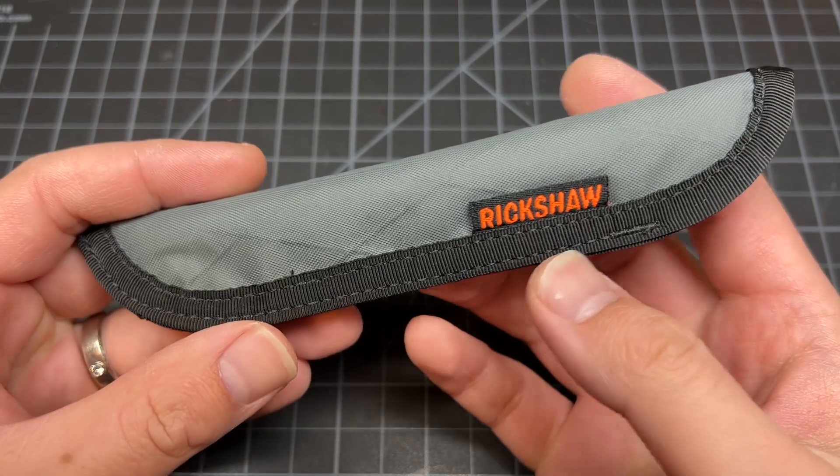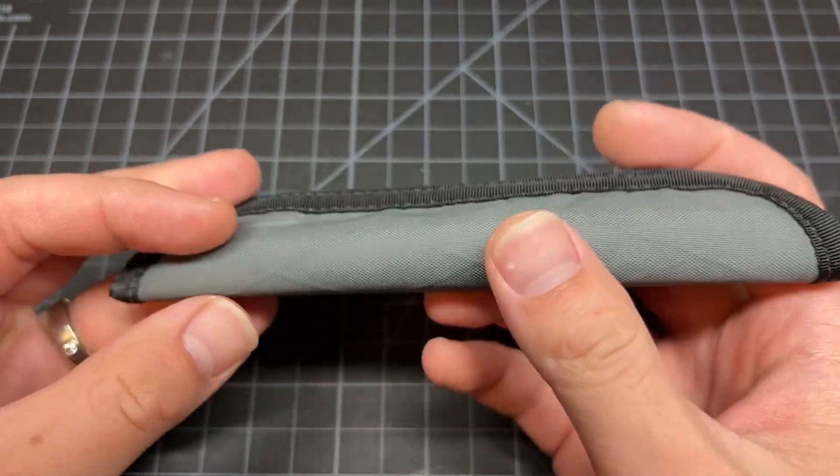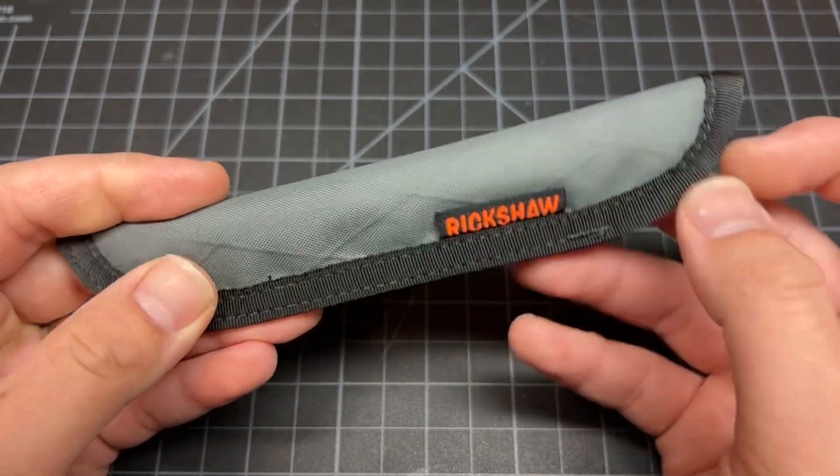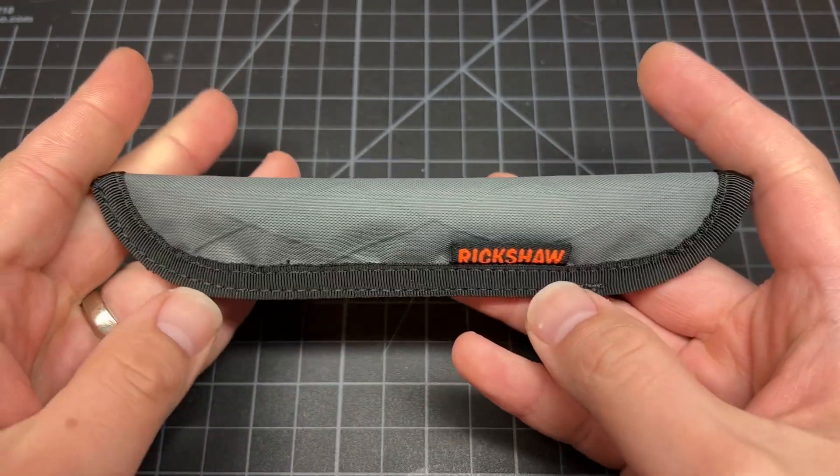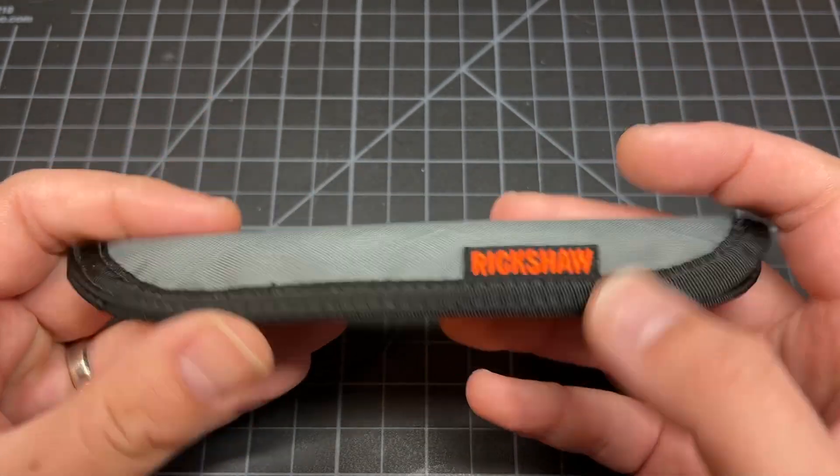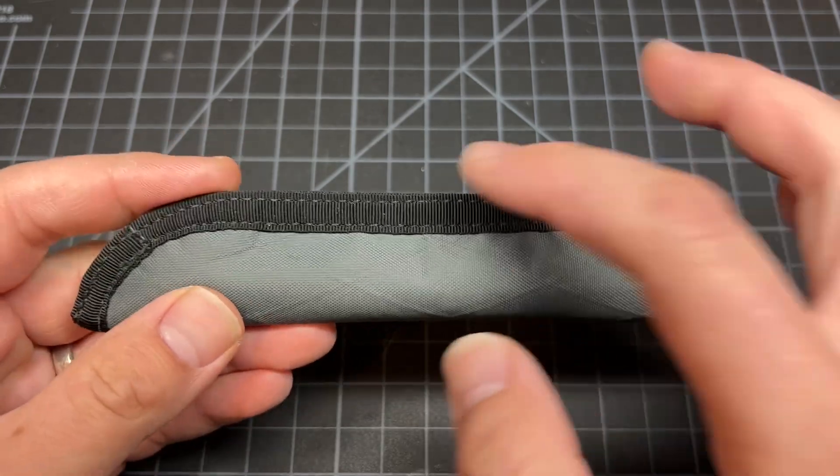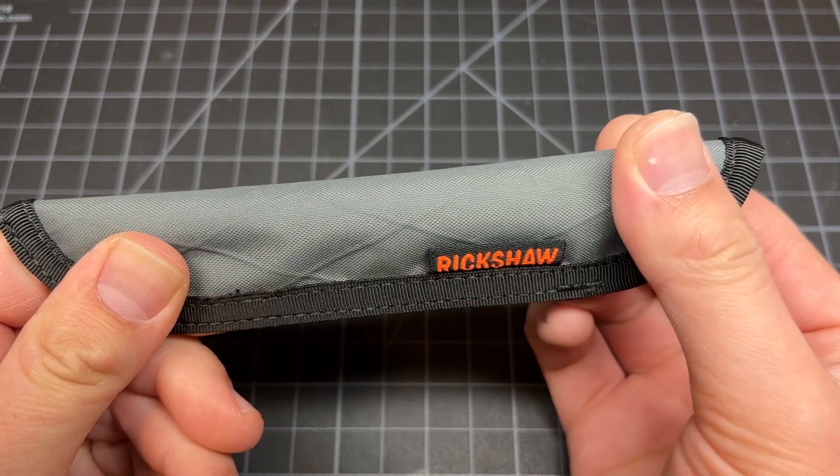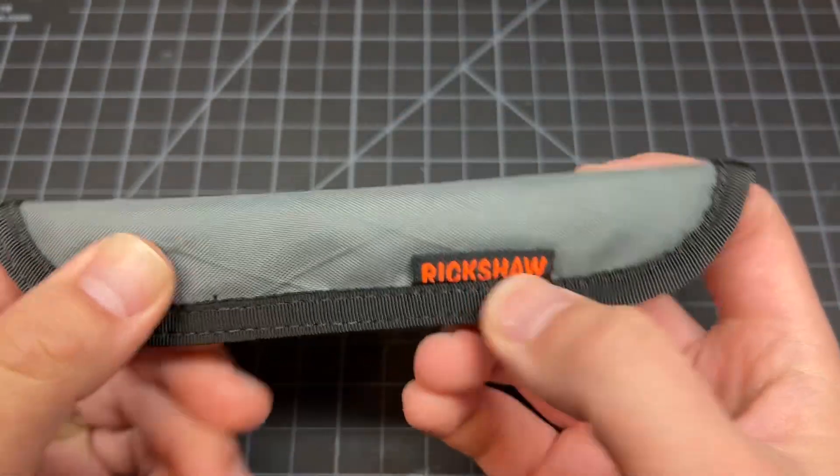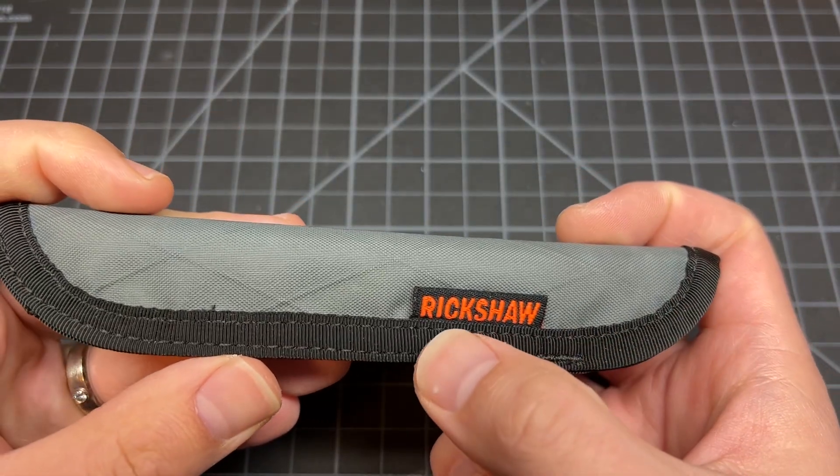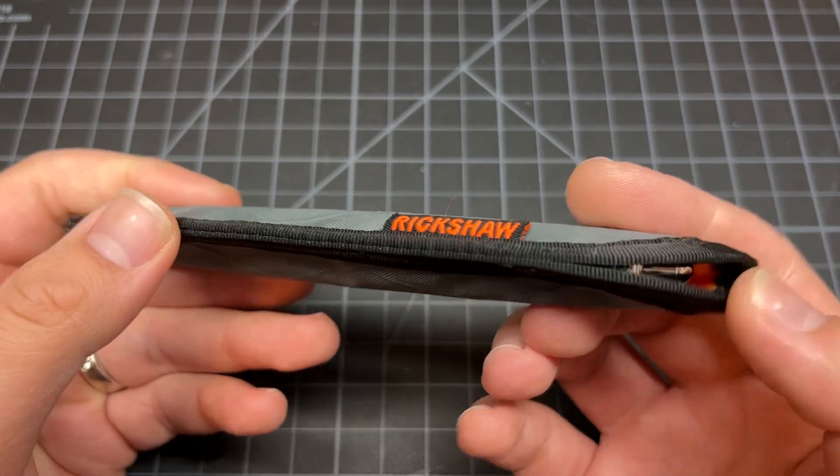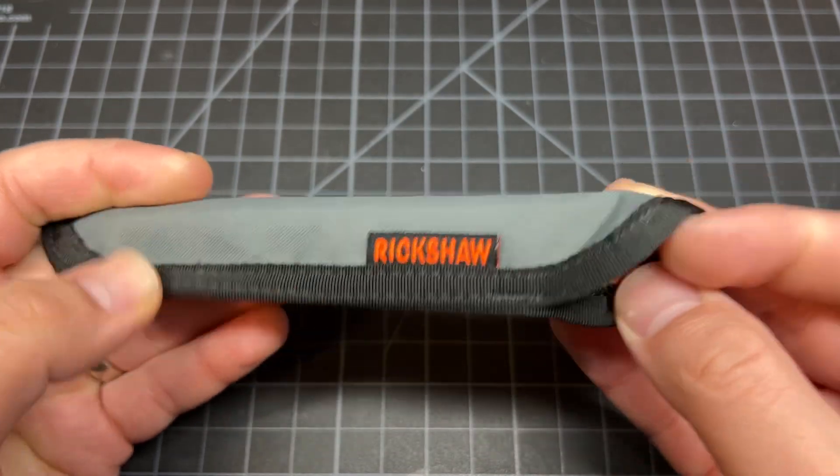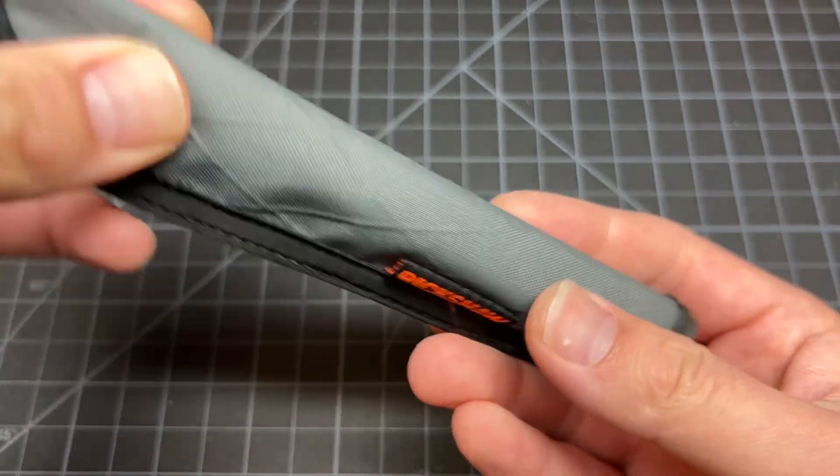Today, we got a Rickshaw pen sleeve right here with the X-Pack material on the outside. You can pick what color, what material. You can fully customize it from the stitching here. You can pick this color, material, you can pick the tag, what color you want the Rickshaw to be, what color you want the liner to be on the inside, as well as the size of the sleeve.